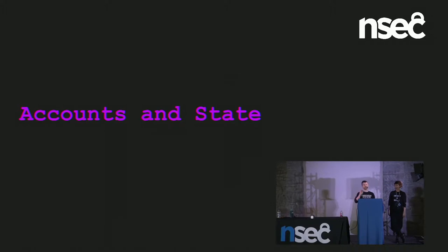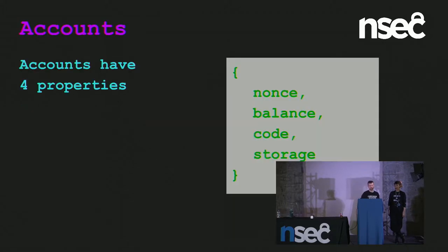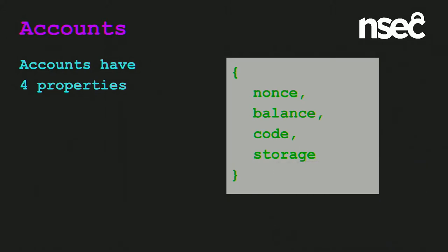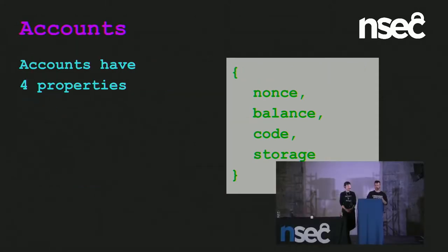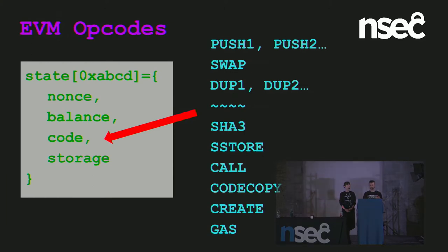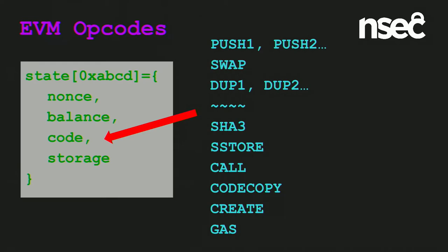A really fundamental object in Ethereum is that we have accounts and we have state. An account has four properties. Each account is tied to an address, just like with Bitcoin. In each account you have a nonce — for replay protection — you have a balance, measured in ether or ETH, which is the native currency on the network. And then you have code, in Ethereum virtual machine opcodes, which may or may not be in any given account. And then you also have storage — that's like the disk, it holds storage values.